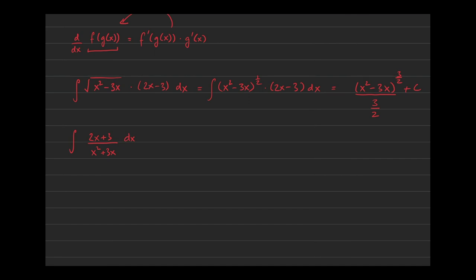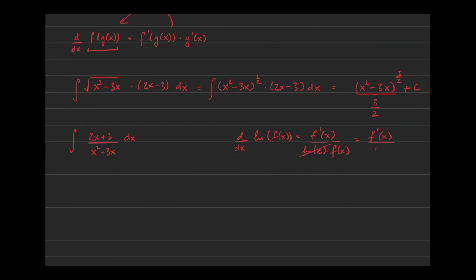Anytime you have rational functions — polynomial over polynomial — you want to think of log rules first. Recall that the derivative of ln(f(x)) is f'(x) over f(x), since ln(e) is just one. The rule boils down to f' over f, so you want to undo the log rule whenever you see the derivative of the denominator in the numerator. Here, differentiating x² plus 3x gives exactly 2x plus 3, so the answer is ln of the absolute value of the denominator, x² plus 3x, plus C.